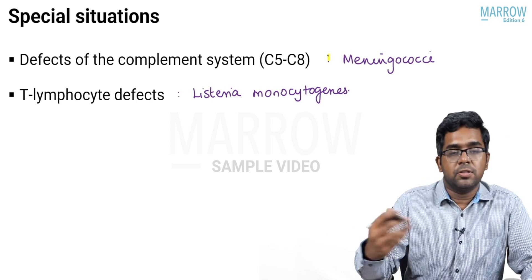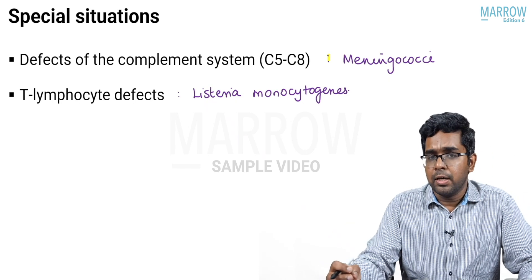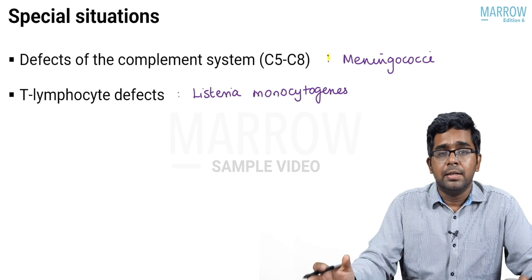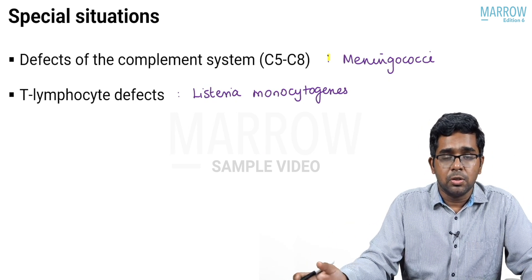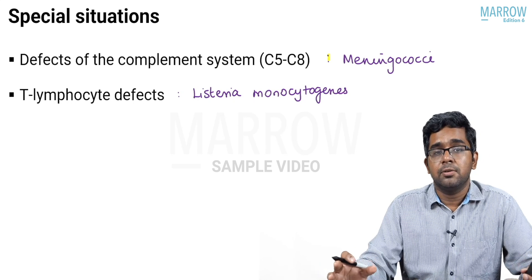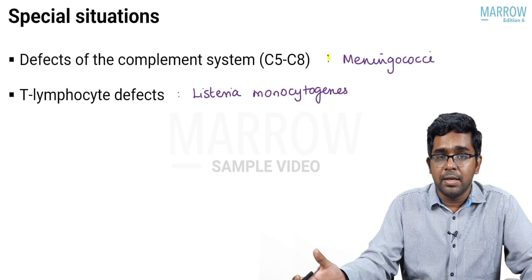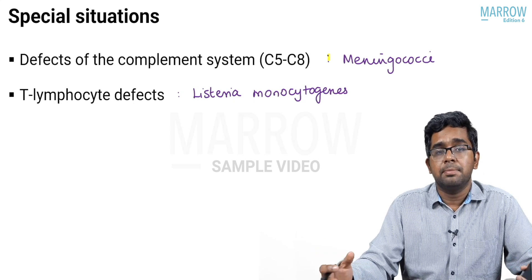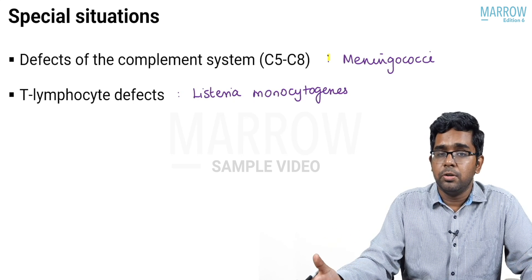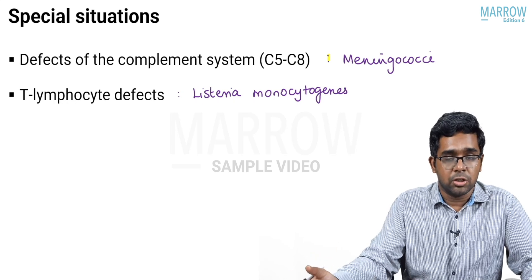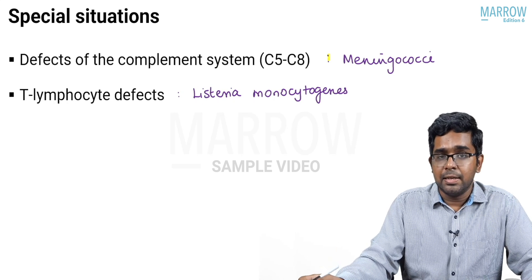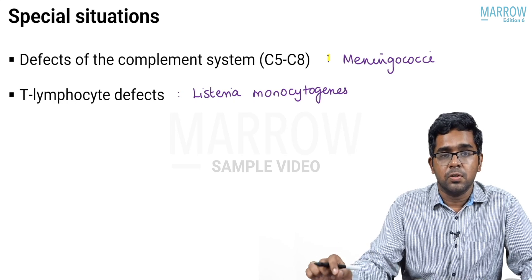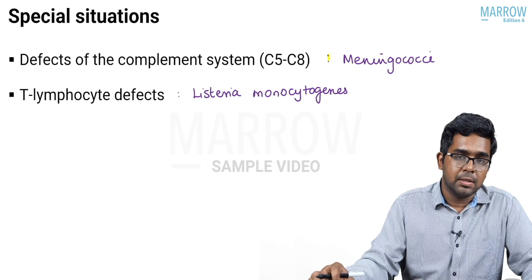This T-lymphocyte defect can occur as part of DiGeorge syndrome, severe combined immunodeficiency, or acquired immunodeficiency like HIV. In those cases, Listeria monocytogenes is a common cause.